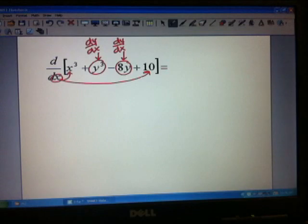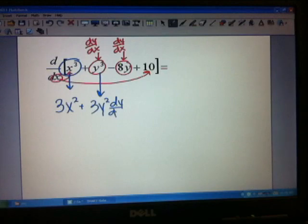So if I start taking this derivative, I've got from my x cubed function, that's going to be 3x squared. And then from my y cubed function, that's the other one that we just did, that's going to be 3y squared dy/dx.